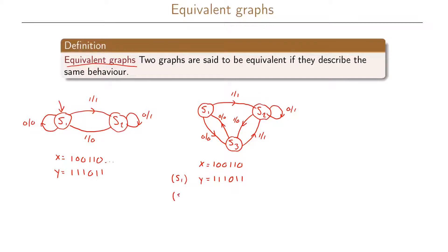Now instead assume that we start in state S3. If we start in S3 and get a 1 as input we output a 1, then we input two zeros and stay in state S2 for both, then we have a 1 as input and go to state S3 with a 0 as output, then with another 1 we go back to state S2 with a 1 as output, and for the last 0 input we stay in state S2 with a 1 as output.